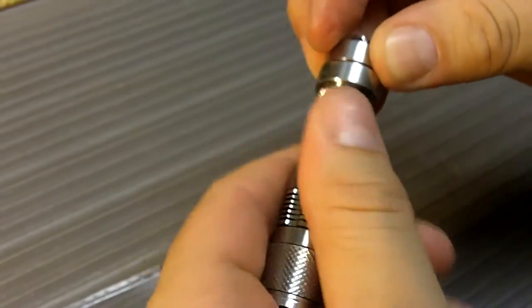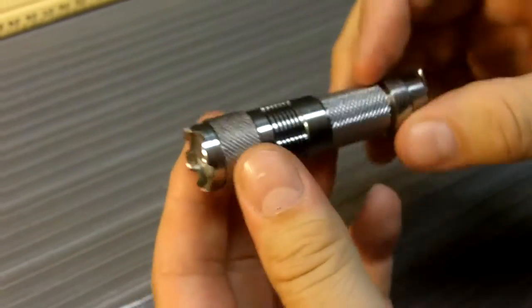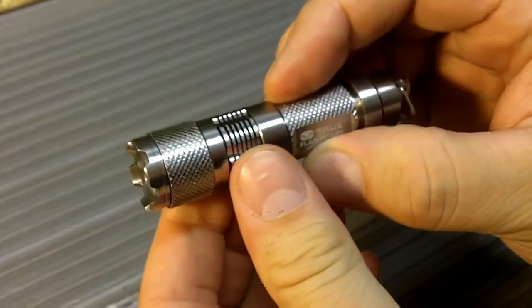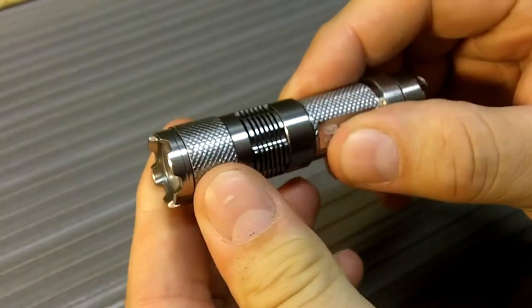This light is made out of aircraft-grade anodized aluminum. As we go down the flashlight, it's got pretty good knurling here, and it's got some ridges here that give you really good purchase on it.